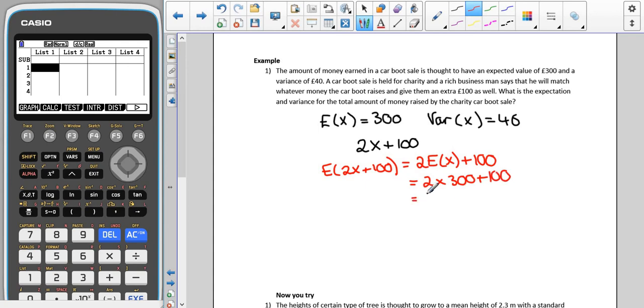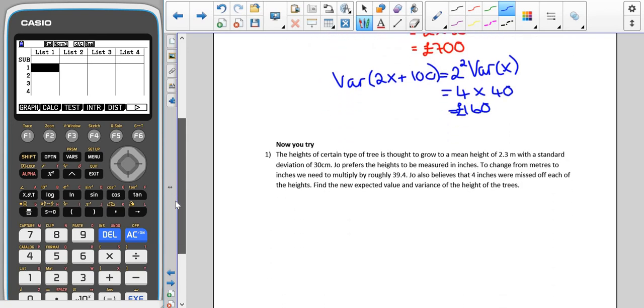For the variance, again thinking about what we've just been talking about, we're finding the variance of 2X plus 100. The plus 100 doesn't change anything, but we are going to have 2 squared var of X as our new variance, which means we would have 4 times 40, which means we would have a variance of 160 pounds.